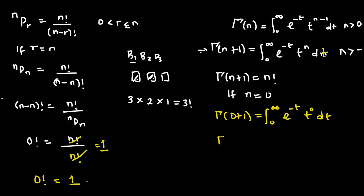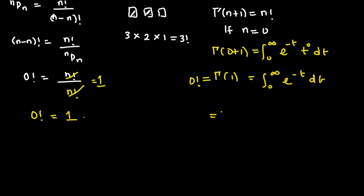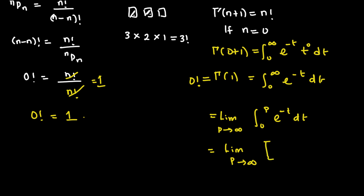If we evaluate this integral, we have the gamma function of 1, which is the same thing as 0 factorial, equal to the integral from 0 to infinity of e raised to the power minus t dt. We can write this as the limit as p tends to infinity of the integral. Integrating e raised to the power minus t gives minus e raised to the power minus t, evaluated between 0 and p. Substituting the upper limit gives minus e raised to the power of minus p.